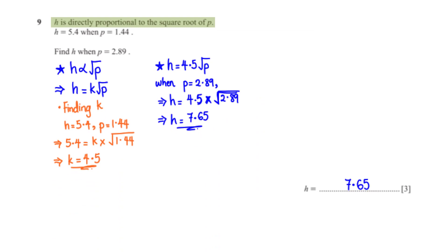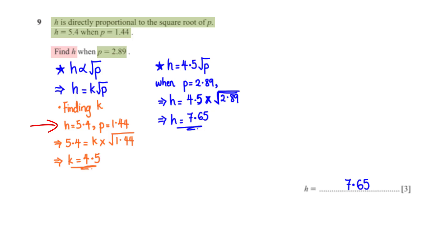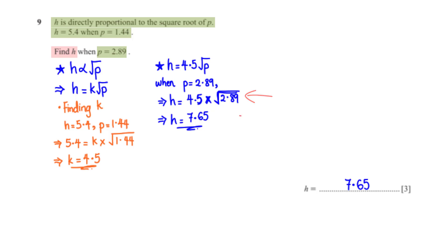H is directly proportional to the square root of P. H equals 5.4 when P equals 1.44. Find H when P equals 2.89. We write H equals K times the square root of P. Substituting H equals 5.4 and P equals 1.44, we get K equals 4.5. So H equals 4.5 times the square root of P. When P equals 2.89, H equals 7.65.